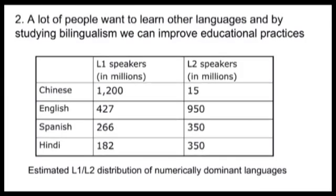The other reason is somewhat more applied. So many people want to learn languages because they want to travel, because they need it for work. And here I have an example of the numerical distribution of four most dominant languages in the world and the number of people who speak them as their first and as their second language.